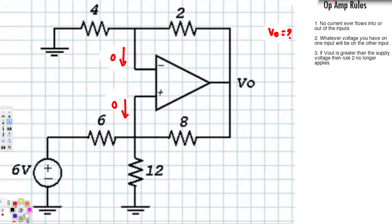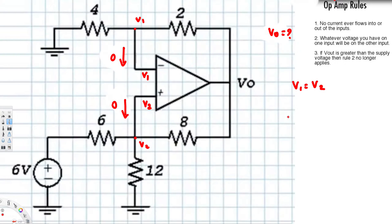Let's say this node is V2 and this one is V1. Since we don't have current here, this is also V1, and since we don't have current in between, this is going to be V2. The second rule says whatever voltage you have on one input will be on the other input, so V1 is equal to V2. That's all we need to know.